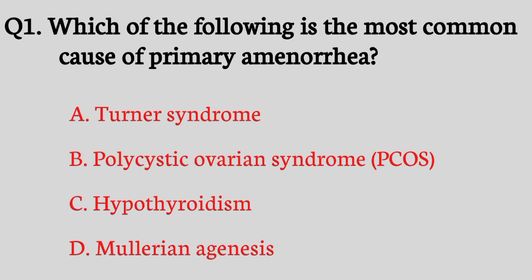Question number one. Which of the following is the most common cause of primary amenorrhea? The right answer is option A: Turner syndrome.